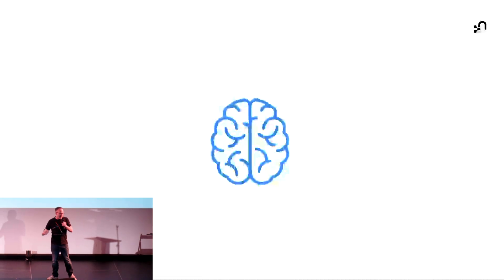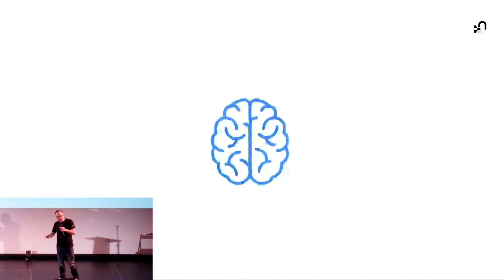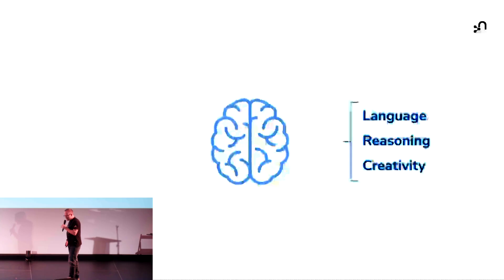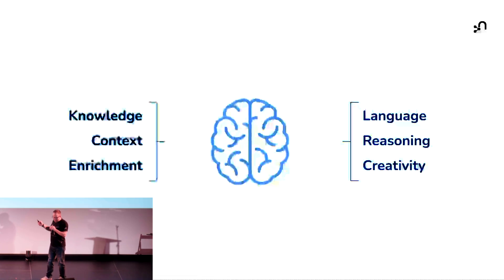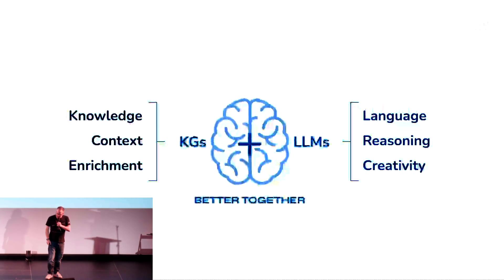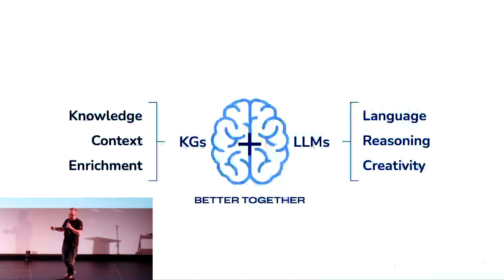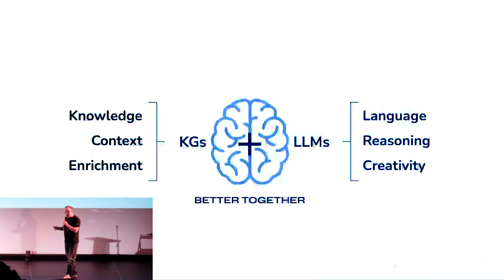If we think about this left brain/right brain model — which psychologists don't like, but it works for this analogy — if we have language, reasoning, and creativity on one side, and knowledge, context, and enrichment on the other, LLMs are really good at language, reasoning, and creativity, but not quite so good at knowledge, context, and enrichment. But knowledge graphs are.